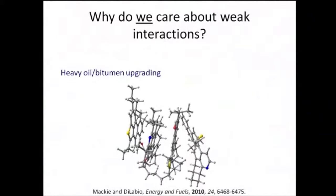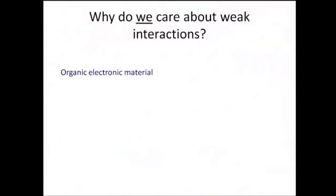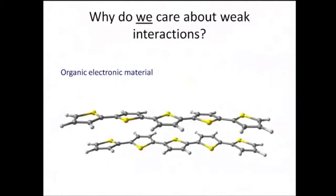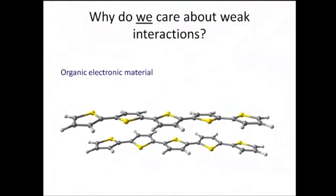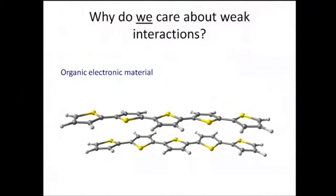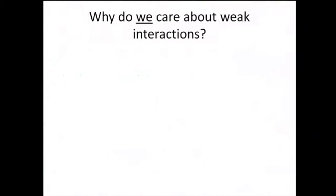We've also been modeling recently structures related to asphaltinic materials that appear in oil sands bitumen. Asphaltenes are some of the bad things in bitumen that prevent efficient upgrading to valuable commercial products. We've been using our techniques to understand the nature of these structures, how strongly they bind as a result of non-covalent interactions, and what can be done to mitigate some of the binding. We've also done some work with organic electronic materials, including polythiophene dimers, which are used to build flexible organic solar cells and thin-film transistors.